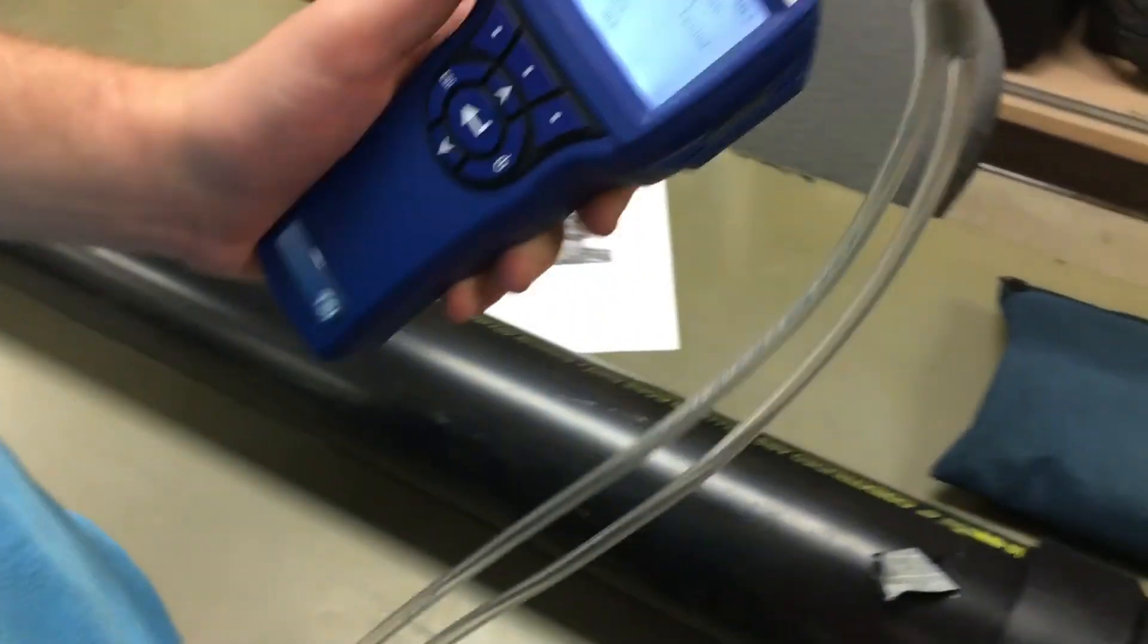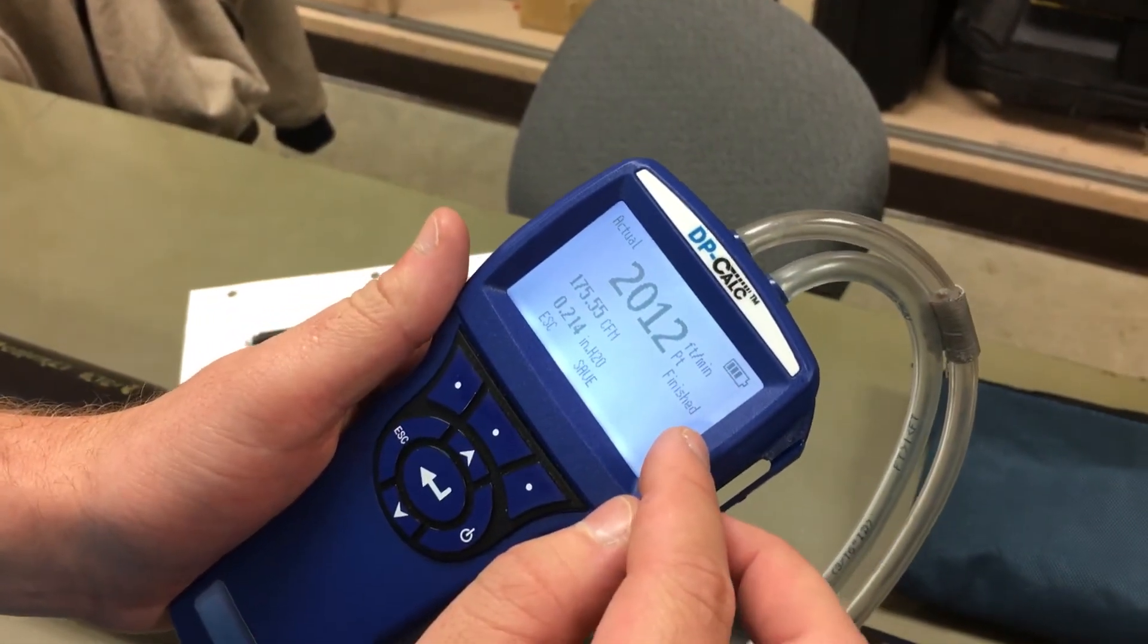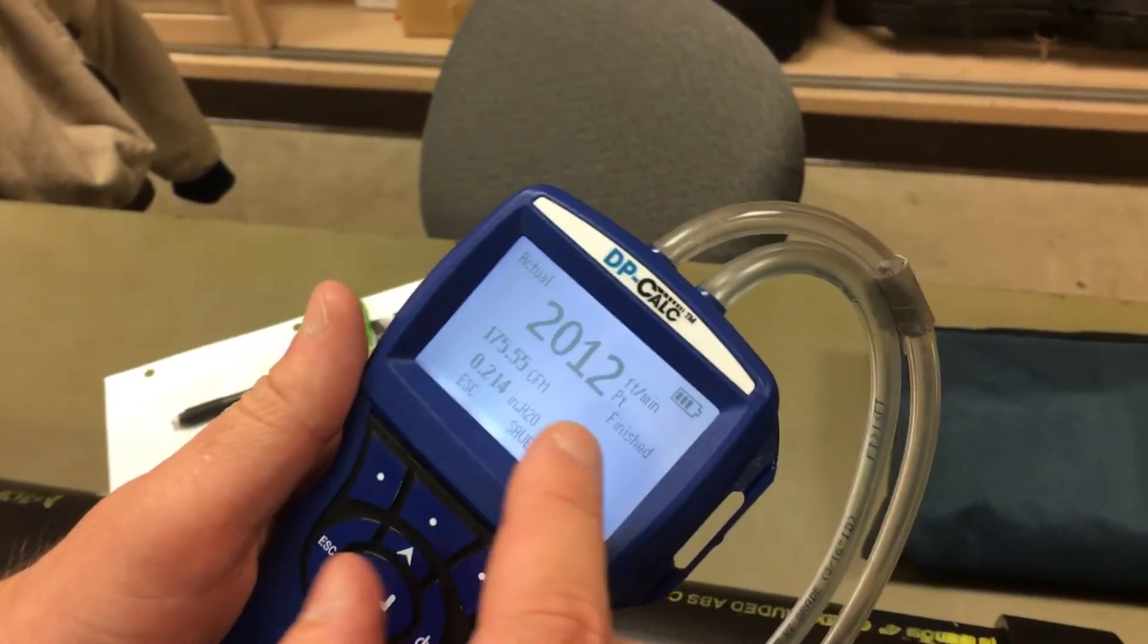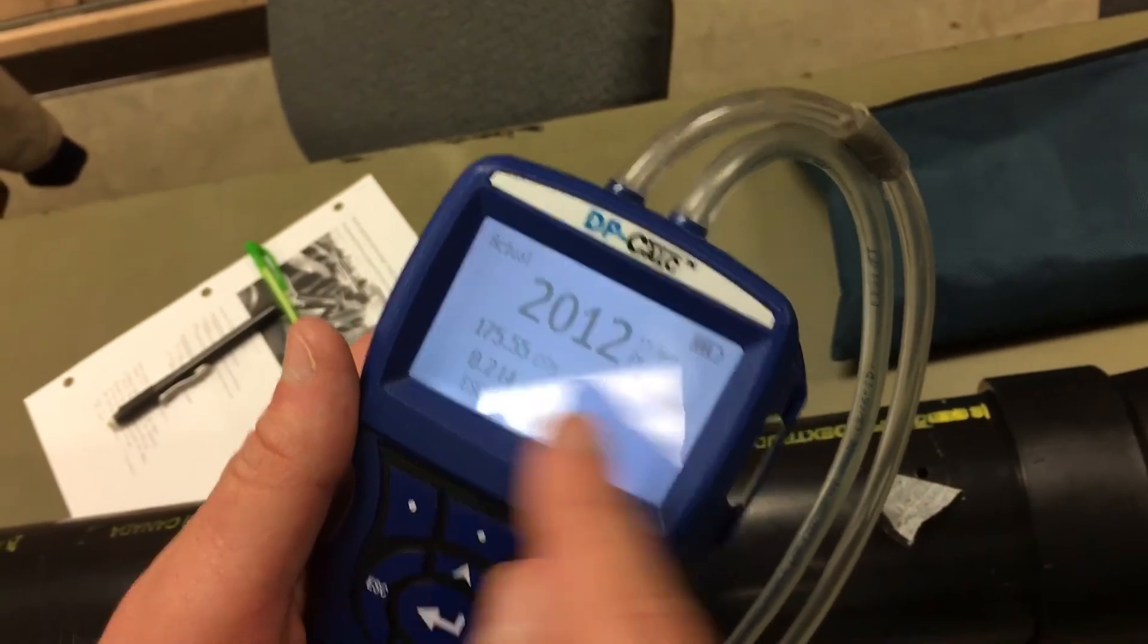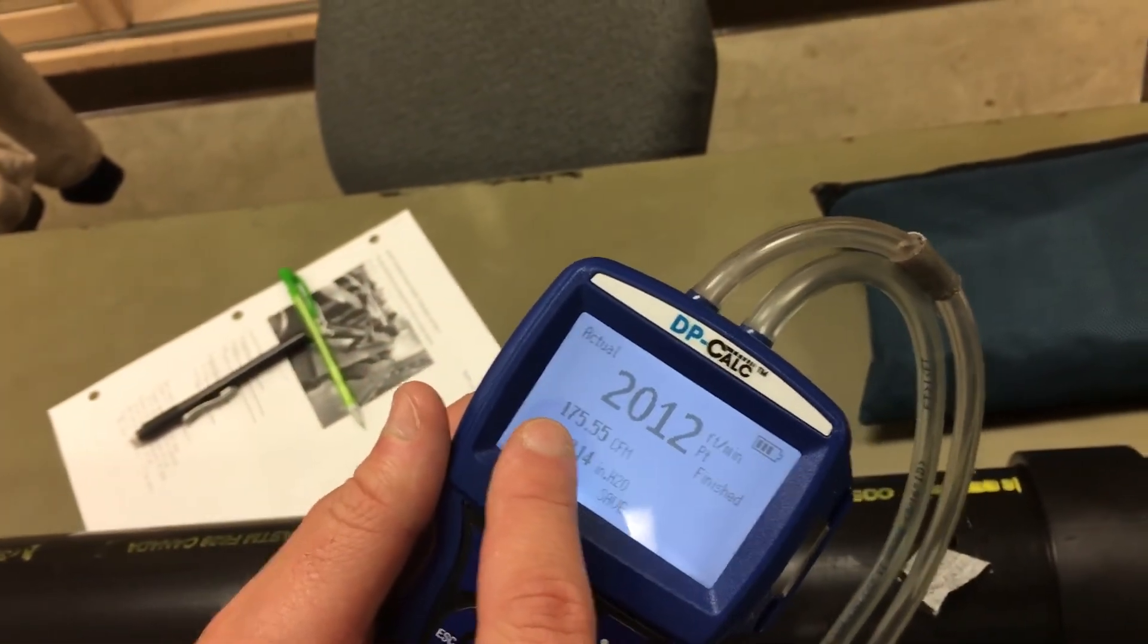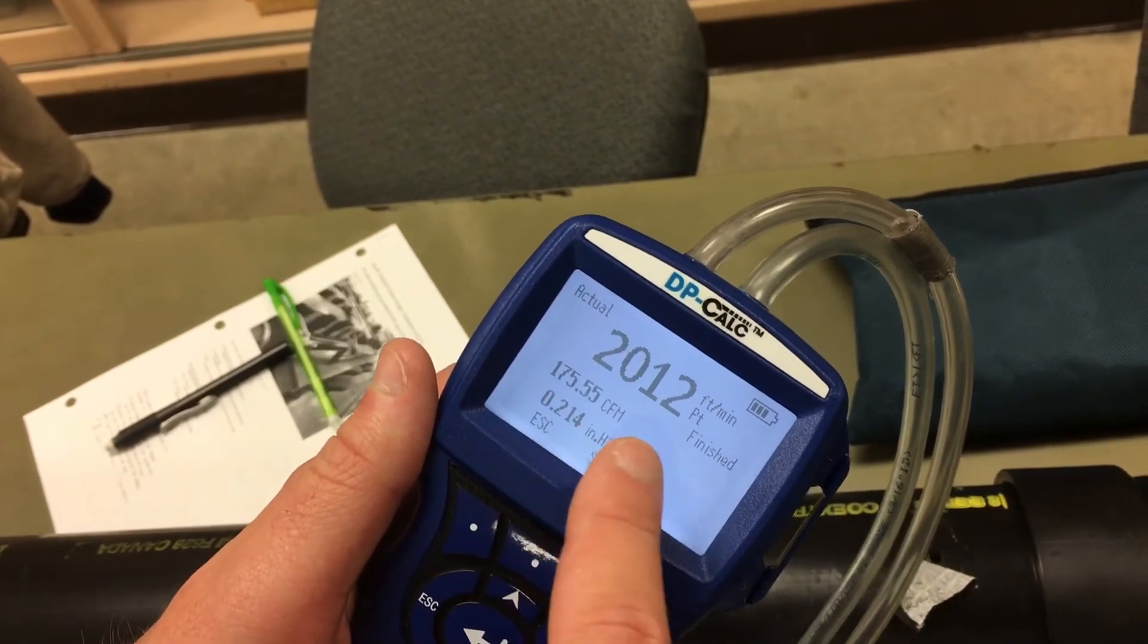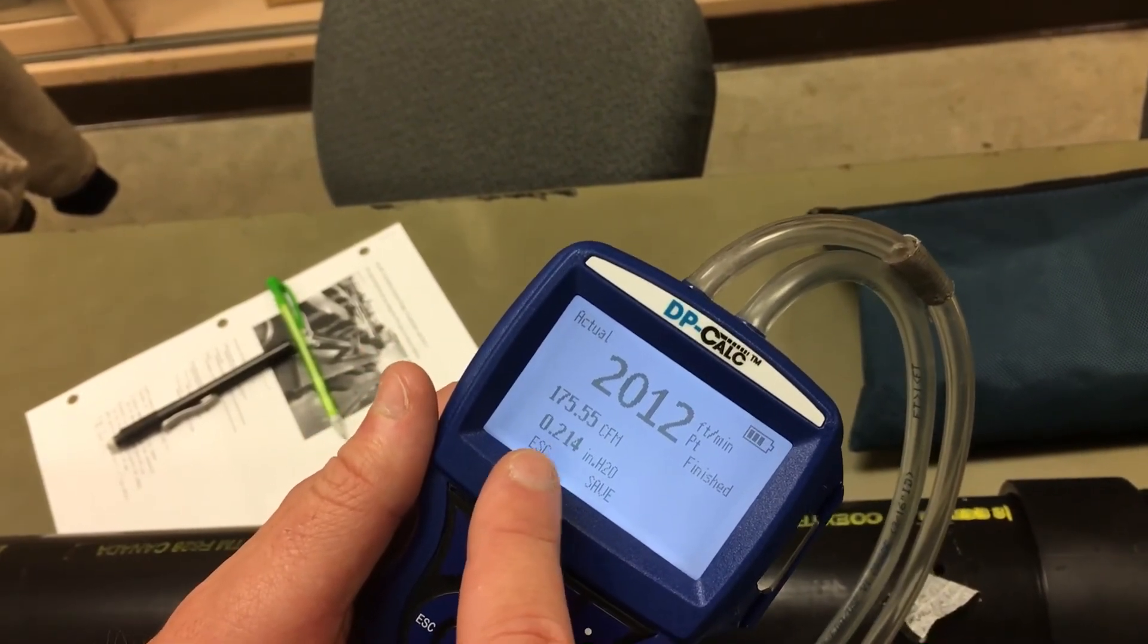I hit the enter button, which measures over the course of a few seconds and gives you an average. For our average, we got 2,012 feet per minute, which with the size of our duct gives us a volumetric flow of 175.55 cubic feet per minute, and the velocity pressure associated with that was 0.214 inches water.